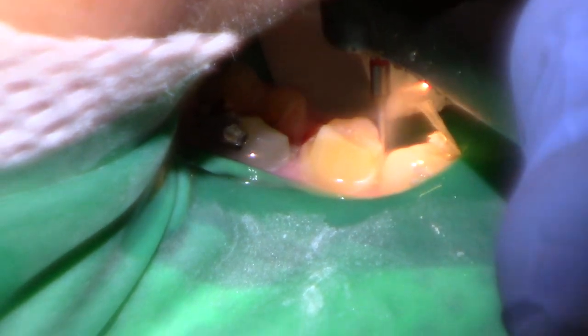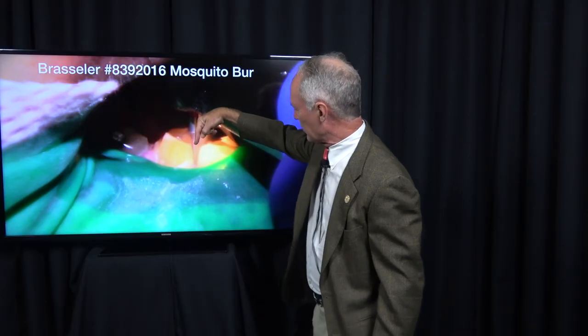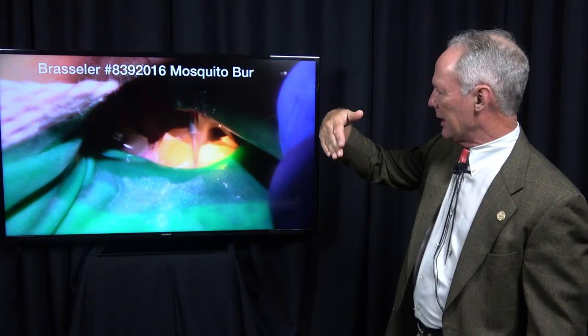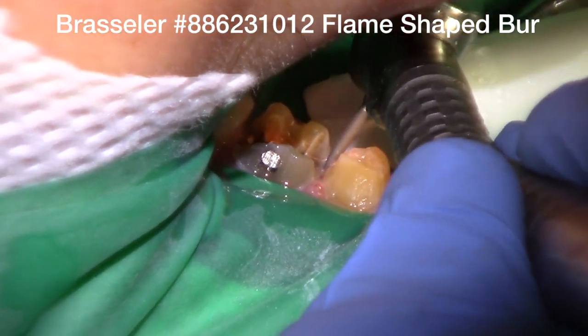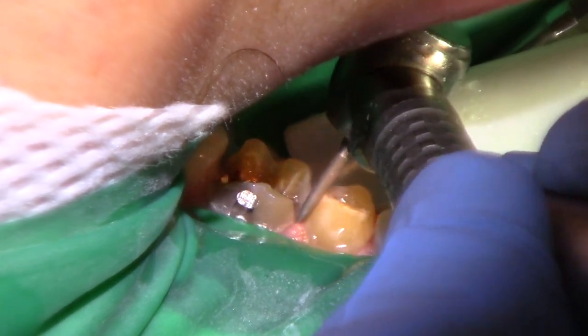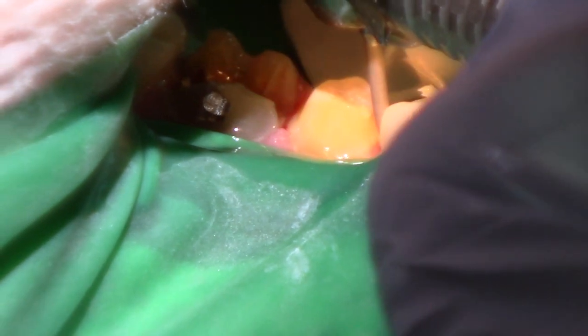This is a mosquito diamond, and it's very effective for interproximal breakage of the contacts. When you've got teeth that I call kissing teeth, and they're just right together, this is a very good burr to break that contact in the gingival aspect of the tooth. Then I'm going to come back with my flame-shaped diamond and polish those margins.